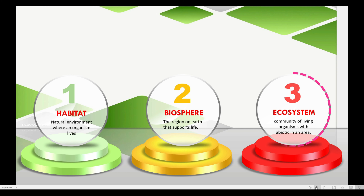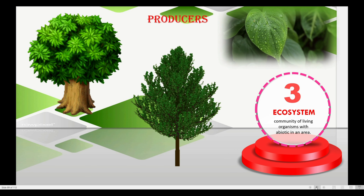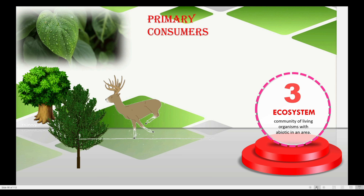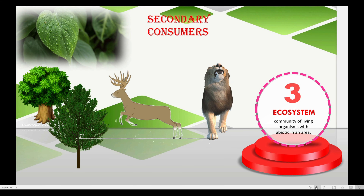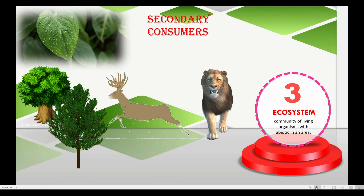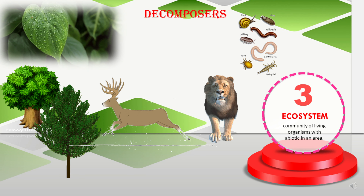Now comes the ecosystem, which is part of your chapter. Ecosystem is a community of living organisms such as producers — for example, plants and trees — consumers like deer and lions, where one is the primary consumer and the other is the secondary consumer, and then decomposers, for example, microorganisms.